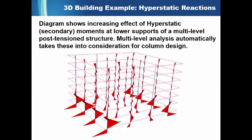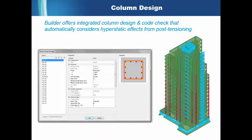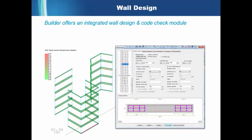The ADAPT Builder solution allows for the direct analysis of hyperstatic forces, which are automatically considered in the global solution. This removes the need for engineers to manually calculate these forces and apply them to their 3D models, saving time and effort. You can then move into the design of your columns — you can design for multiple column sections in your model with full flexibility of how you're detailing and grouping your column sections. The same is true for wall design.